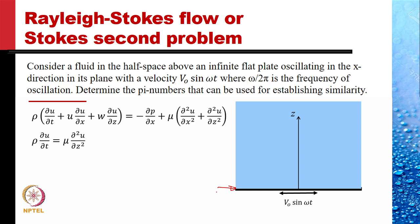We start with the governing equation of motion of the fluid. When there is only one component of velocity u and no pressure gradient in x, y, or z direction, the equation of motion simplifies to: rho (del u / del t) = mu (del² u / del z²). This is unsteady flow with only one component of velocity, which is a function of z and t only.